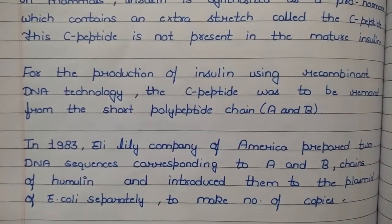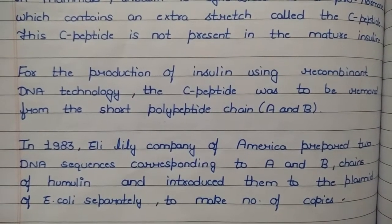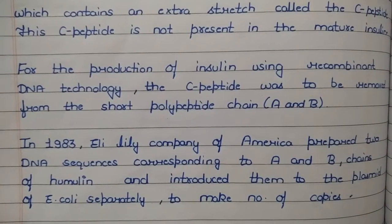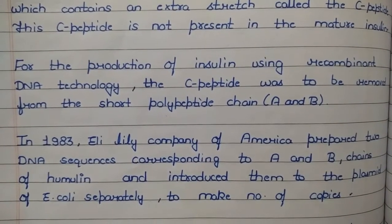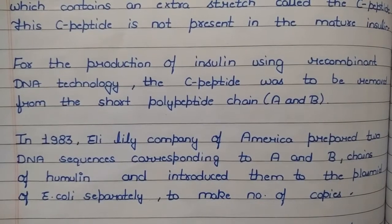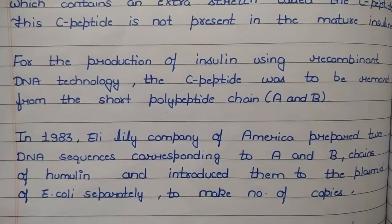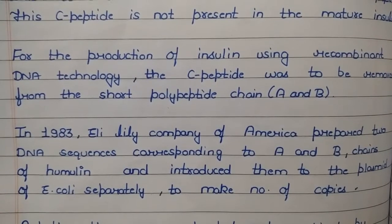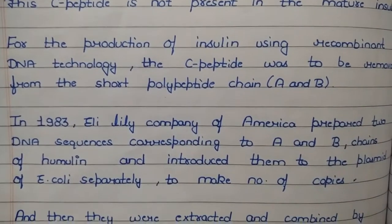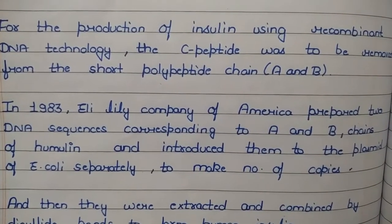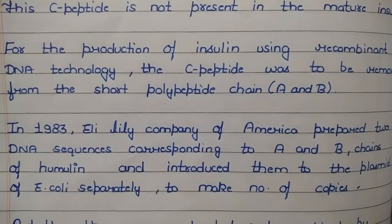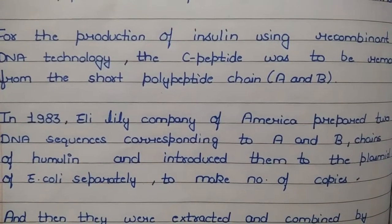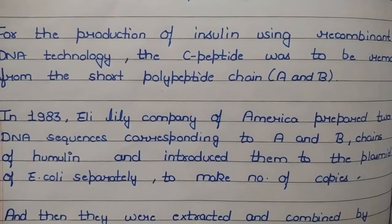For the production of insulin using recombinant DNA technology, the C peptide had to be removed from the pro-hormone so that copies produced would not contain it. In 1983, Eli Lilly Company of America prepared two DNA sequences corresponding to the A and B chains of humulin and introduced them into the plasmid of E. coli separately to make multiple copies.